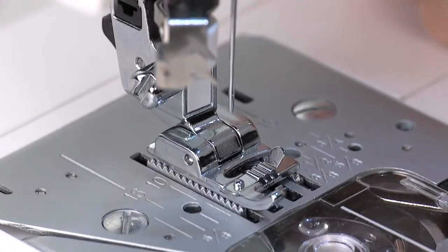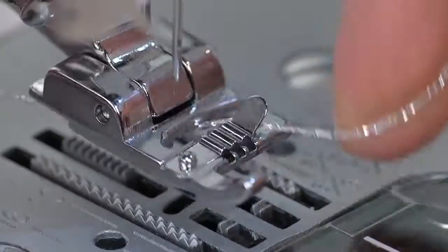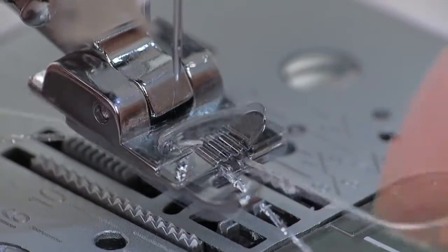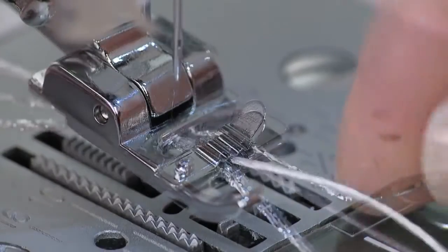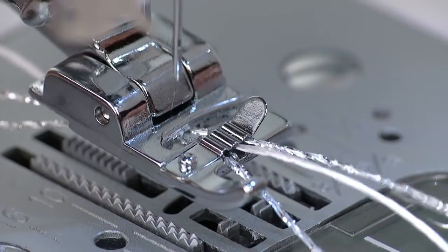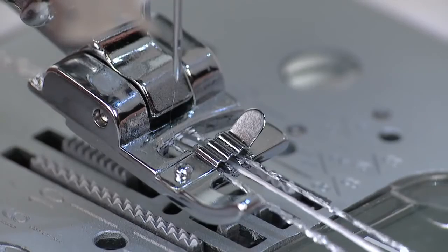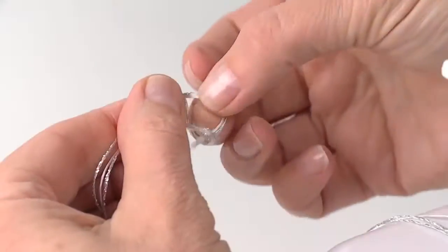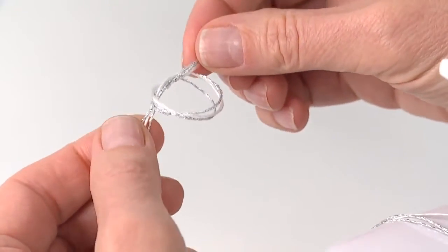Attach the foot to the presser foot holder. Place a decorative cord or thin braid into each of the foot's grooves. The cords should be thin enough to move freely through the grooves. Secure the cords at the back of the foot by tying a knot.